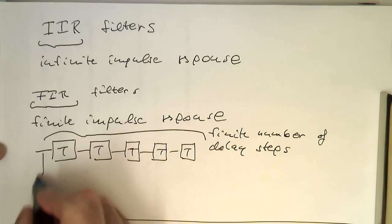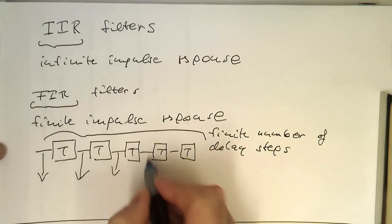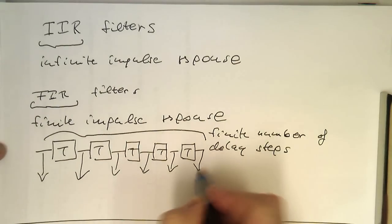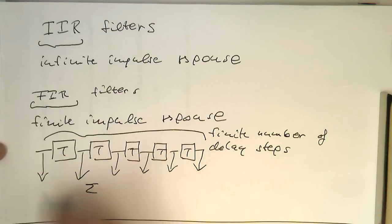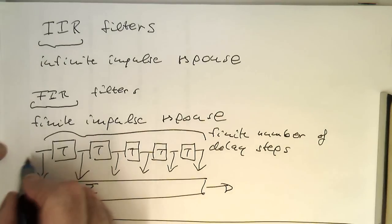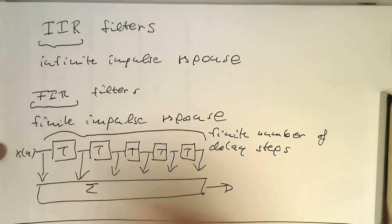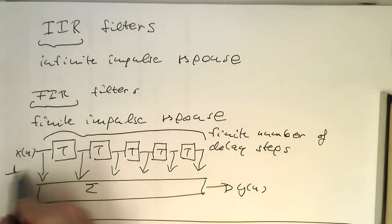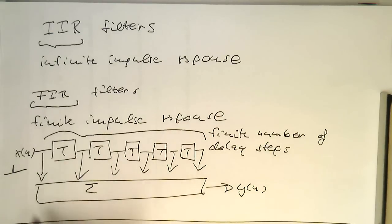If we're sending a signal through all these taps here, and this comes out here again—that's our X of N, that's our Y of N—and we're sending a signal in here, then this signal will slowly progress through this filter.